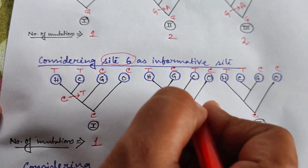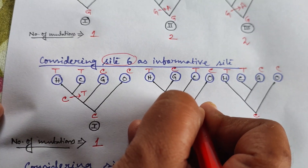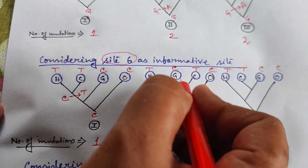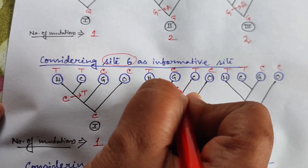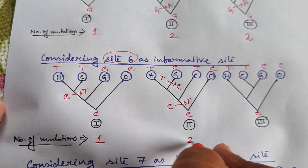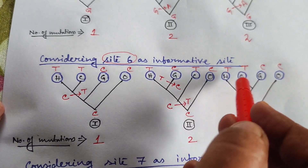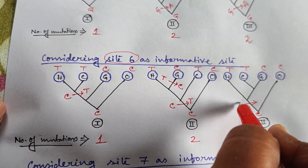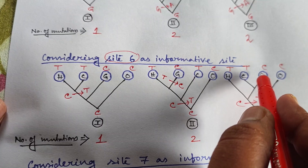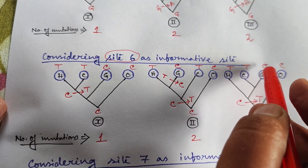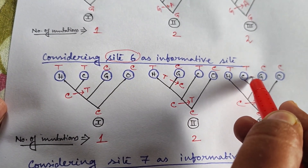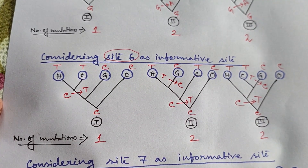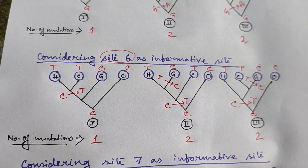For tree 2 at site 6: draw C to T mutation so all three of human, gorilla and chimpanzee become T, then draw T to C to convert gorilla back to C. Lowest number of mutations = 2. For tree 3: similarly draw C to T so three taxa become T, then T to C to convert one back to C. Lowest number of mutations = 2. So site 6 gives: tree 1 = 1, tree 2 = 2, tree 3 = 2.